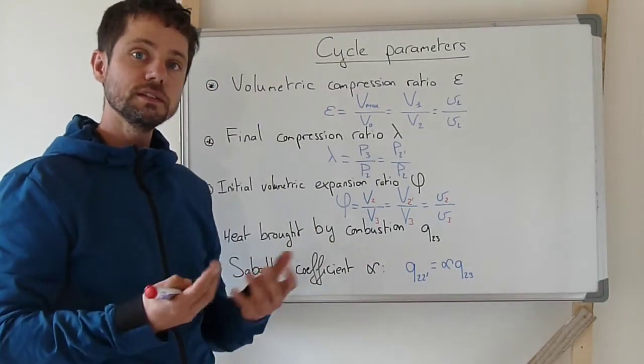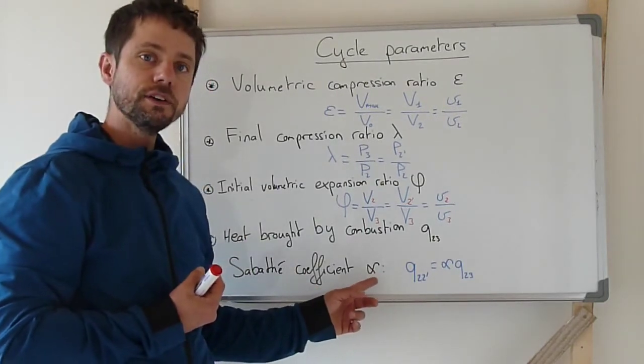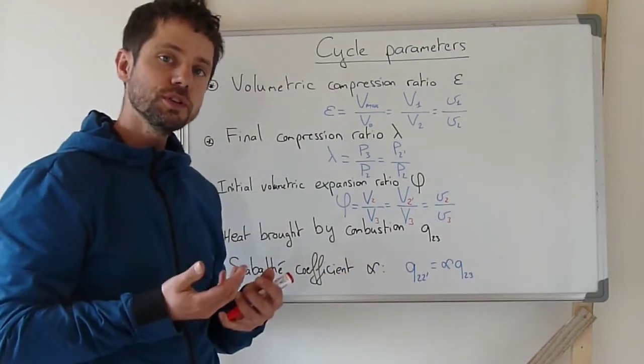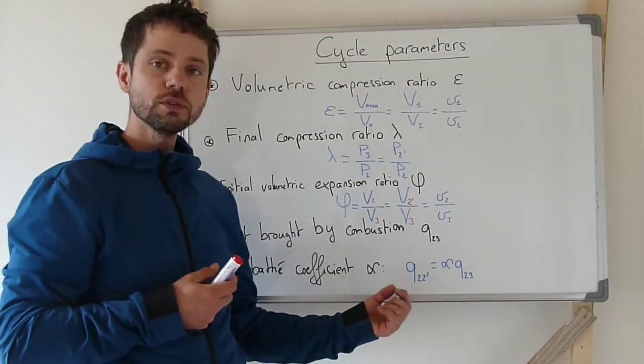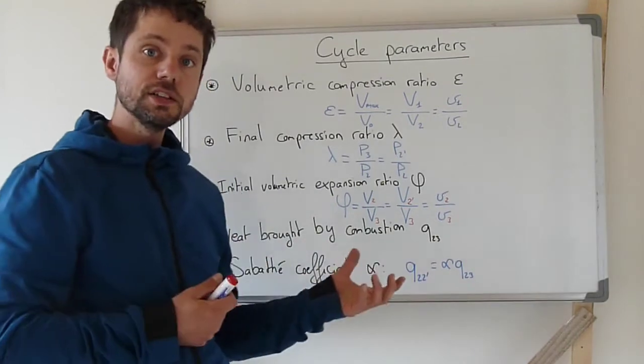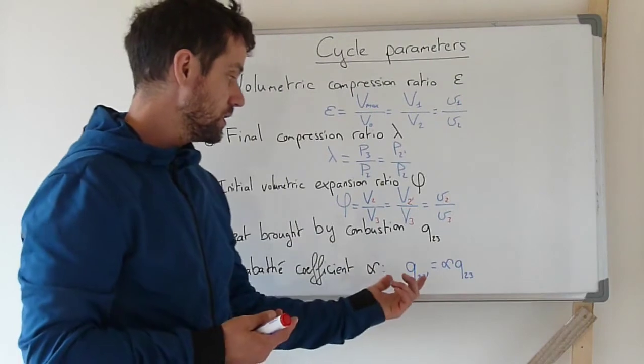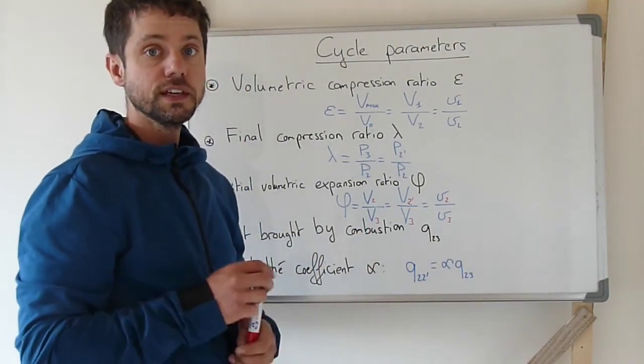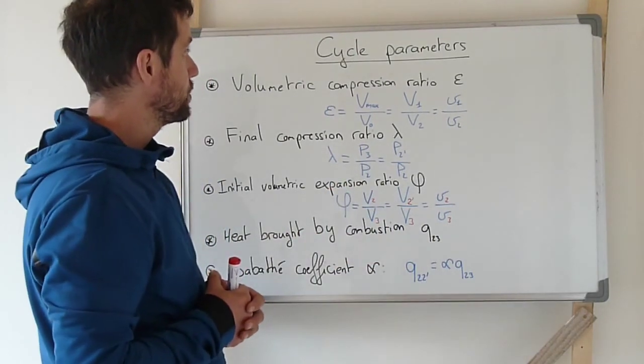Finally, for the case of a Sabaté cycle, we use a coefficient called alpha (α). This coefficient defines what proportion of the heat of combustion is brought during the first isochoric stage of combustion. And 1 minus alpha will be the coefficient for the second stage of combustion, the isobaric combustion from 2 prime to 3. So, these are the parameters.